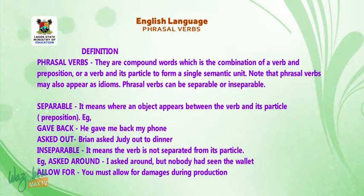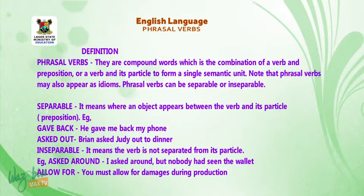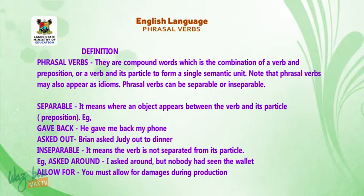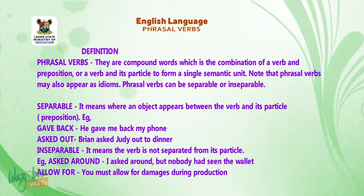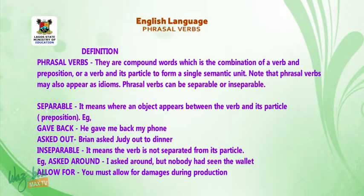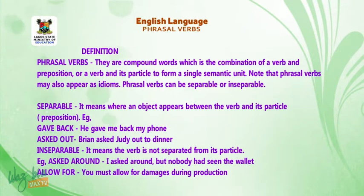Note that phrasal verbs can either be separable or inseparable. Separable means where an object appears between the verb and its particle. For example, 'give back': he gave me back my phone — the word 'me' is in between 'give' and 'back'. Another example: 'act out' — Brian asked Judy out to dinner — the word 'Judy' appears between 'act' and 'out'.